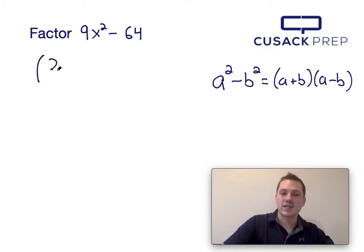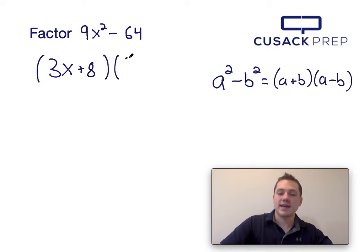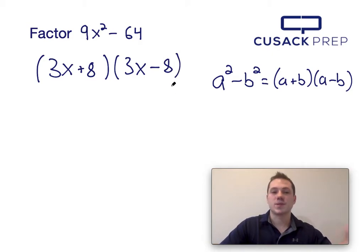The square root of 9x squared is 3x, and the square root of 64 is 8. So plugging those values into the right-hand side of the difference of squares equation, I find that 9x squared minus 64 just equals 3x plus 8 times 3x minus 8.